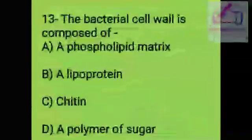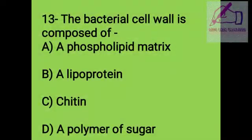Question 13: The bacterial cell wall is composed of: A. Phospholipid matrix, B. Lipoprotein, C. Chitin, D. A polymer of sugar. The right answer is D, a polymer of sugar.